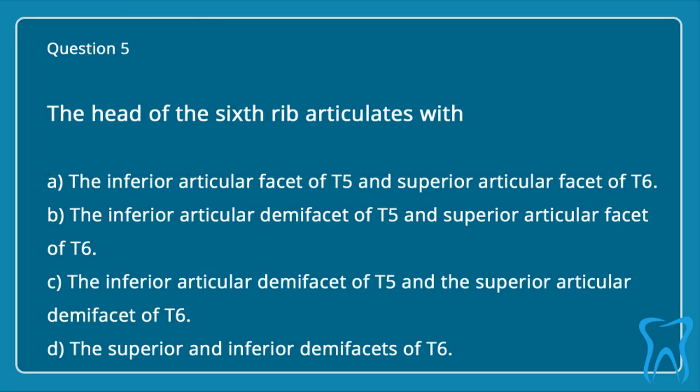Question 5: The head of the sixth rib articulates with: a. The inferior articular facet of T5 and superior articular facet of T6. b. The inferior articular demifacet of T5 and superior articular facet of T6. c. The inferior articular demifacet of T5 and the superior articular demifacet of T6.